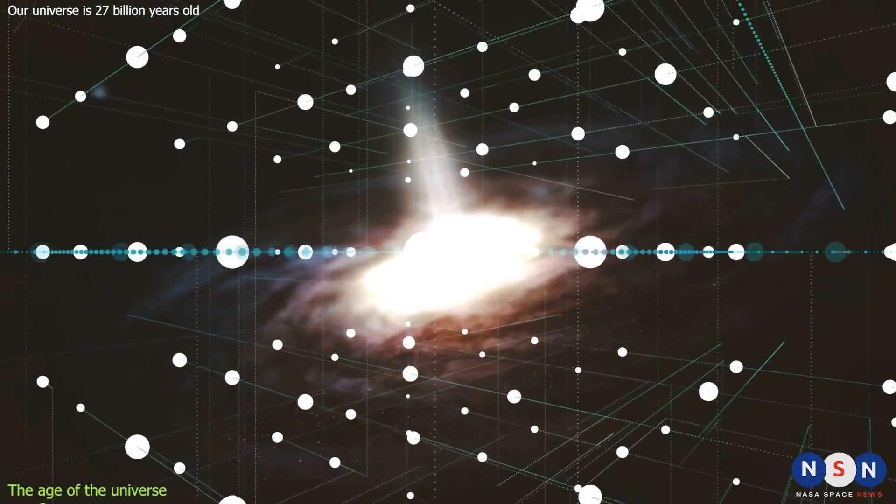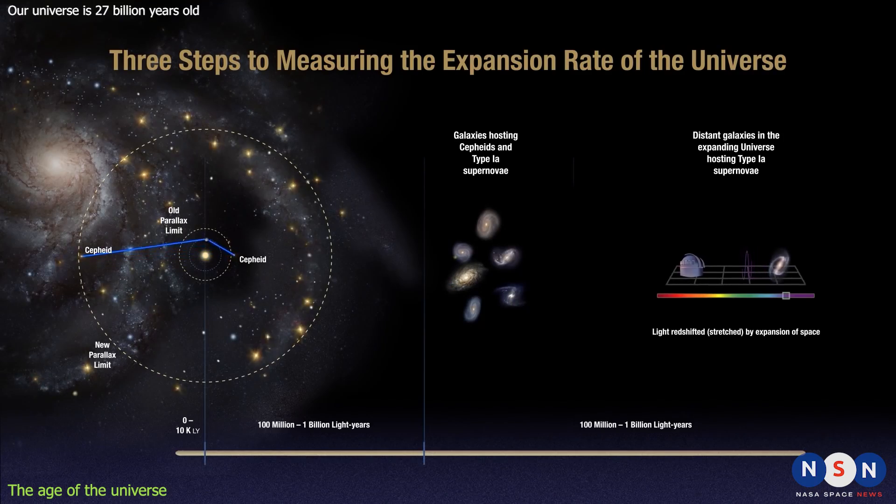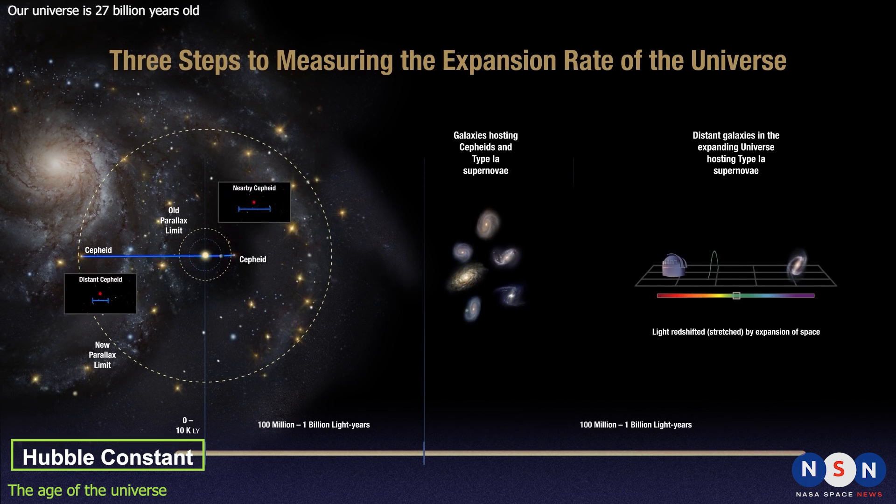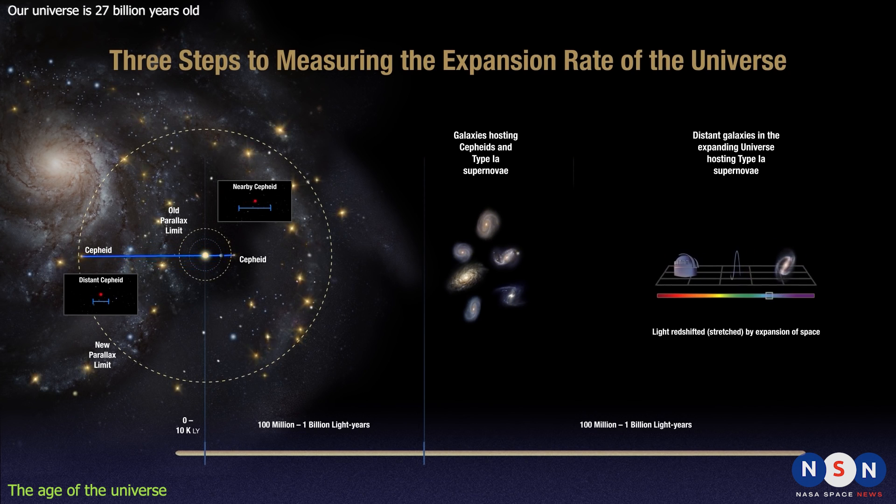The first one is based on measuring the rate of expansion of the universe, known as the Hubble constant. By observing how fast galaxies are moving away from us, we can calculate how long it took them to reach their current positions, and thus how long ago the Big Bang happened.